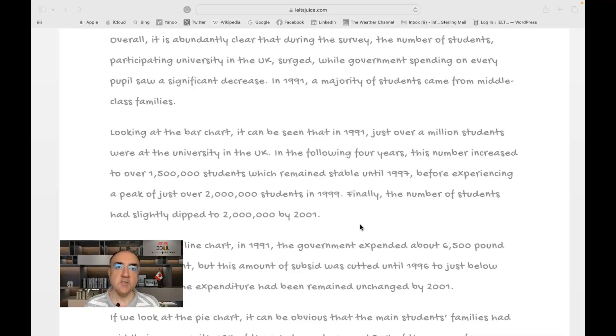Looking at the bar chart, it can be seen that in 1991, just over a million students were at the university in the UK. At the university, I would say at university or were at universities, you can generalize. There's a lesson at IELTS Juice on how to generalize, I'll put it in the description below. In the following four years, this number increased to over 1,500,000 students, which remained stable until 1997.